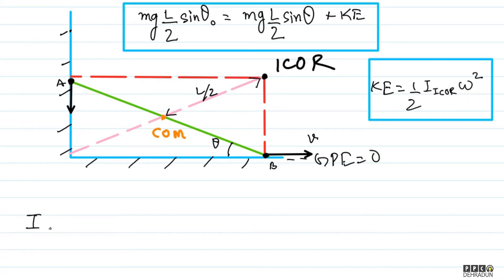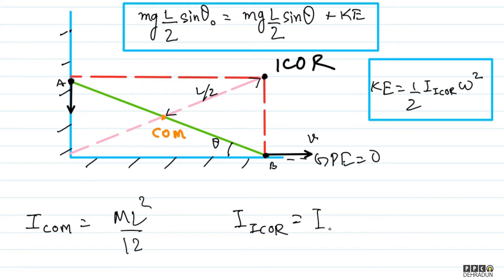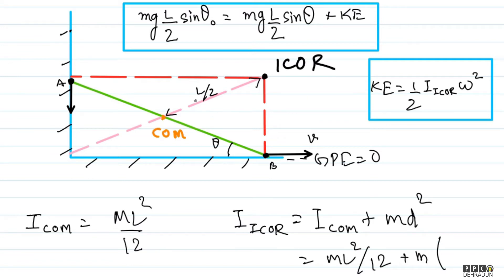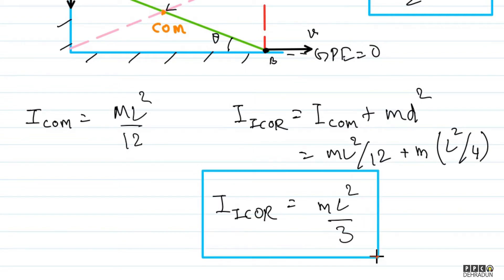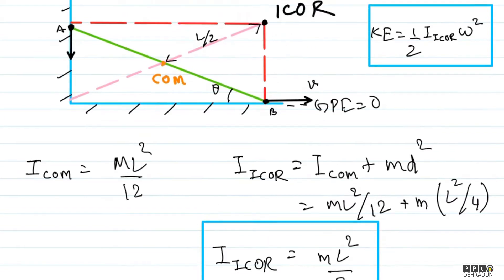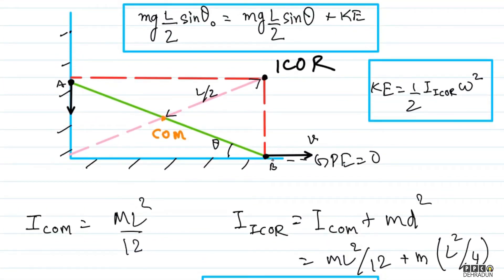The moment of inertia about the center of mass is ML²/12. Using the Parallel Axis Theorem: I_ICOR = I_CM + M·d², where d is the distance from the center of mass to the ICOR, which is L/2. So I_ICOR = ML²/12 + M·(L/2)² = ML²/12 + ML²/4 = ML²/3. This is the moment of inertia about the ICOR point.